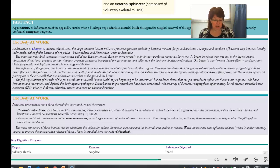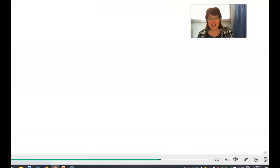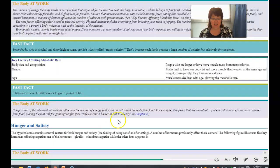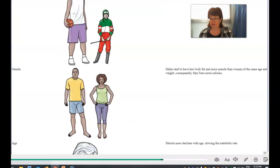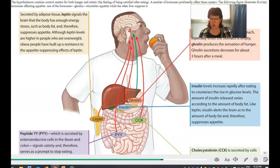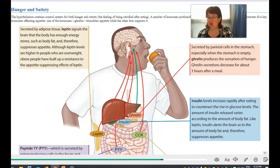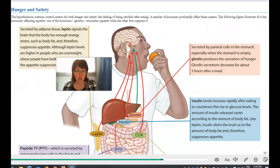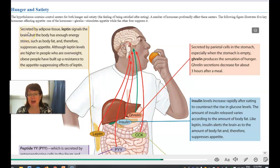So the last topic is on page 447. The five hormones that affect hunger and satiation. The hypothalamus contains control centers for both hunger and satiation, which is the feeling of being satisfied. After eating, a large number of hormones profoundly affect these centers. The following figure illustrates five key hormones affecting appetite.